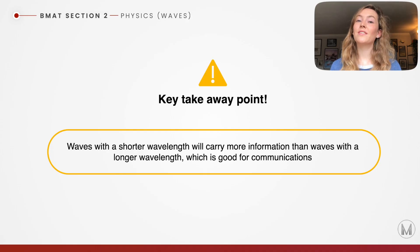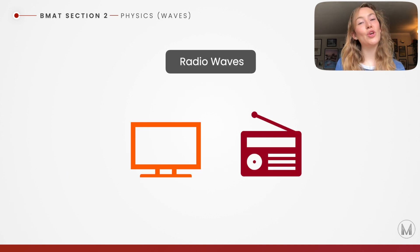When we're discussing the uses of the electromagnetic spectrum, a key point that you need to remember is that waves with a shorter wavelength will carry more information. That's really useful for communication. But we can still use some of the longer wavelengths of the electromagnetic spectrum for communication. Radio waves are used in TV and radio communication. Their long wavelengths actually have a benefit. They can diffract around hills and landmarks.